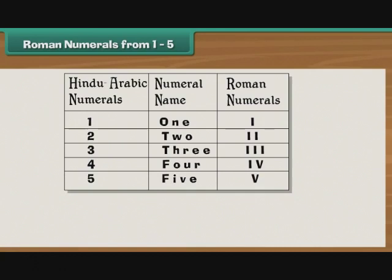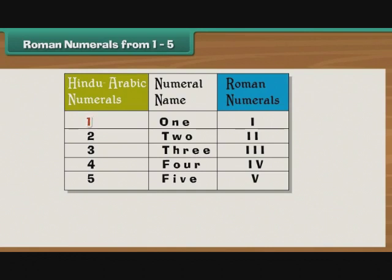Roman numerals from 1 to 5. The Roman numeral corresponding to the Hindu Arabic 1 is I. As 2 is 1 plus 1, it is written as 2 I's.